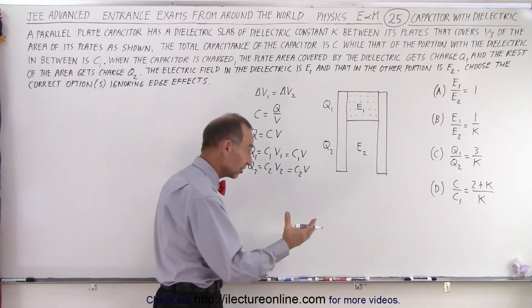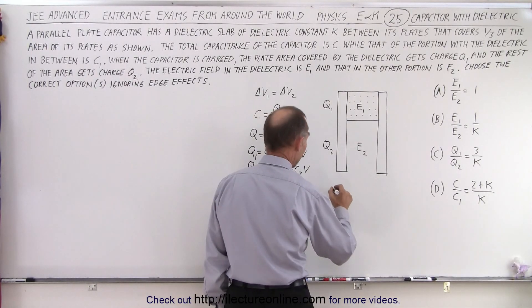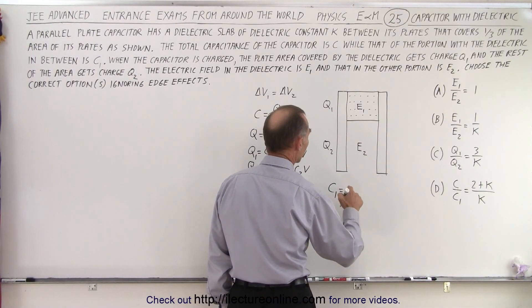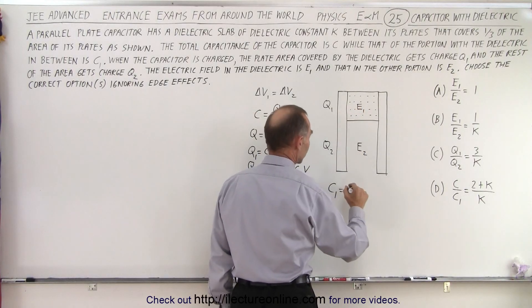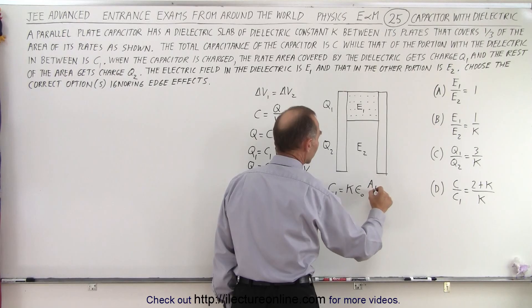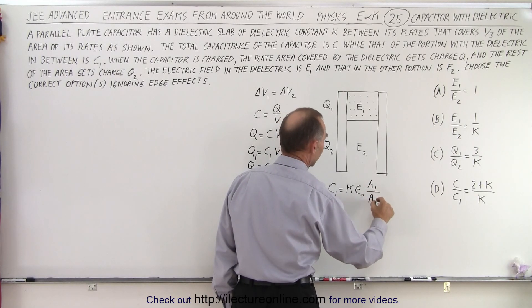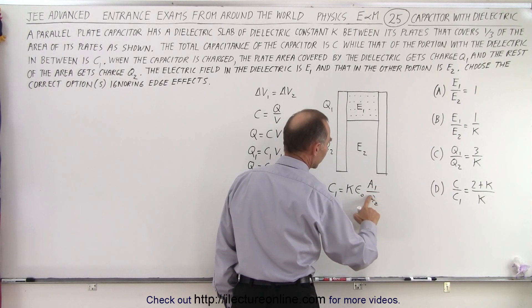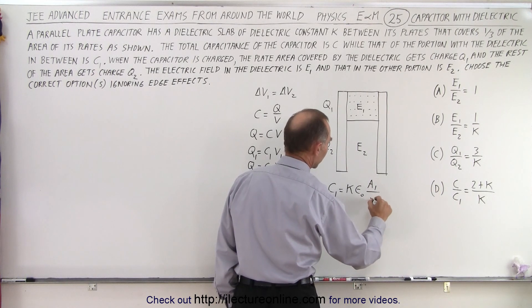You also know from the physical size of a capacitor that C1 must equal, and here we have a dielectric, so it's the dielectric constant K times epsilon naught times the area, let's call it A1 divided by D, the distance between the plates.